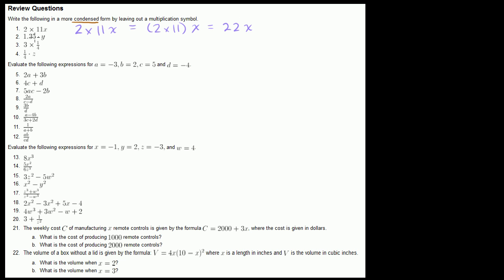Next we have 1.35 times y. Here we're just simplifying how we write it. In algebra, we can get rid of the dot symbol. If we have a variable following a number, we know that means 1.35 times that variable. So we can rewrite it as simply 1.35y — we've condensed it by getting rid of the multiplication sign.